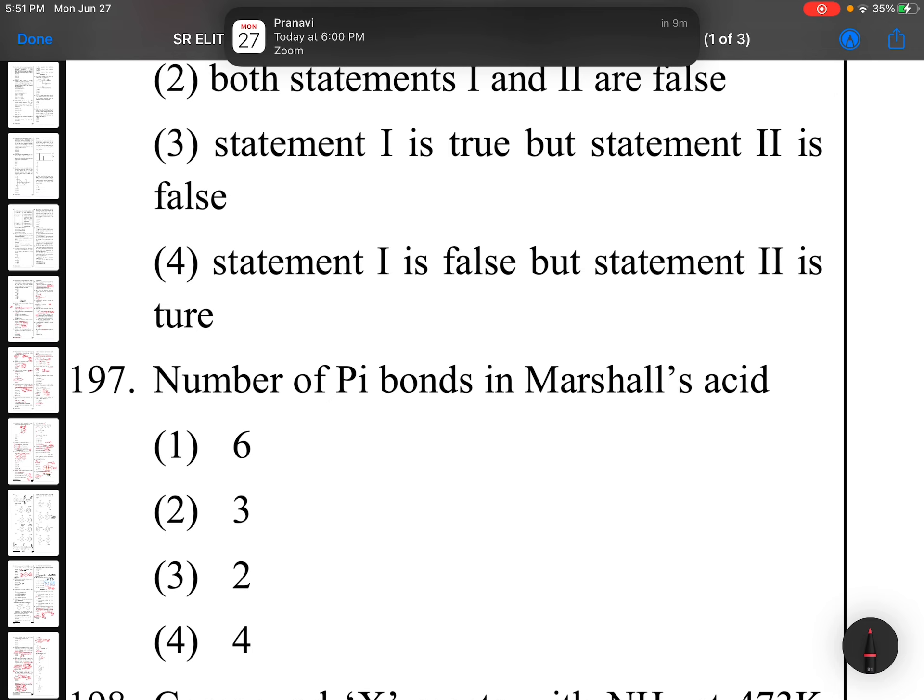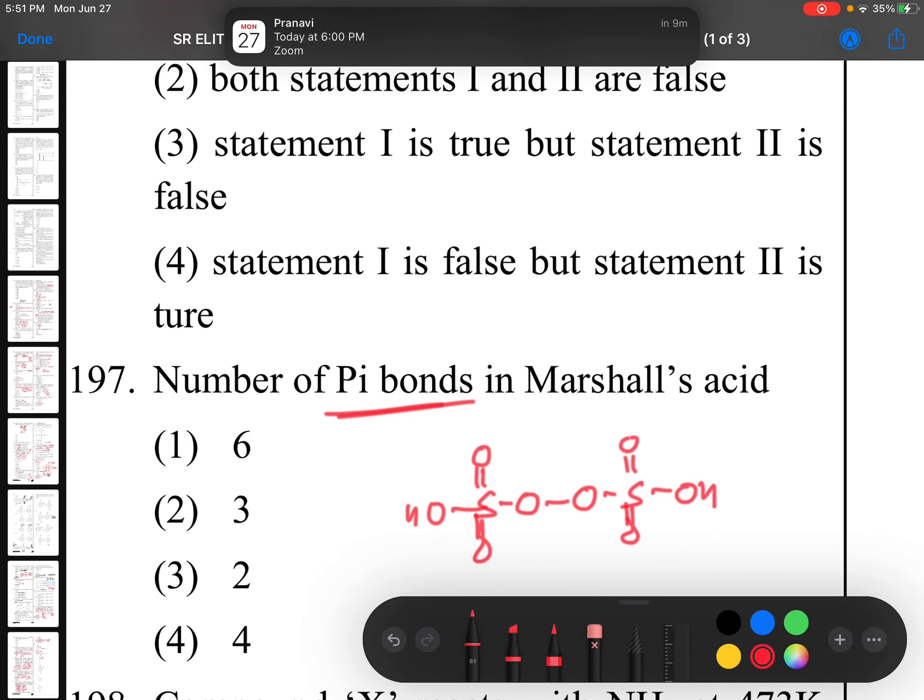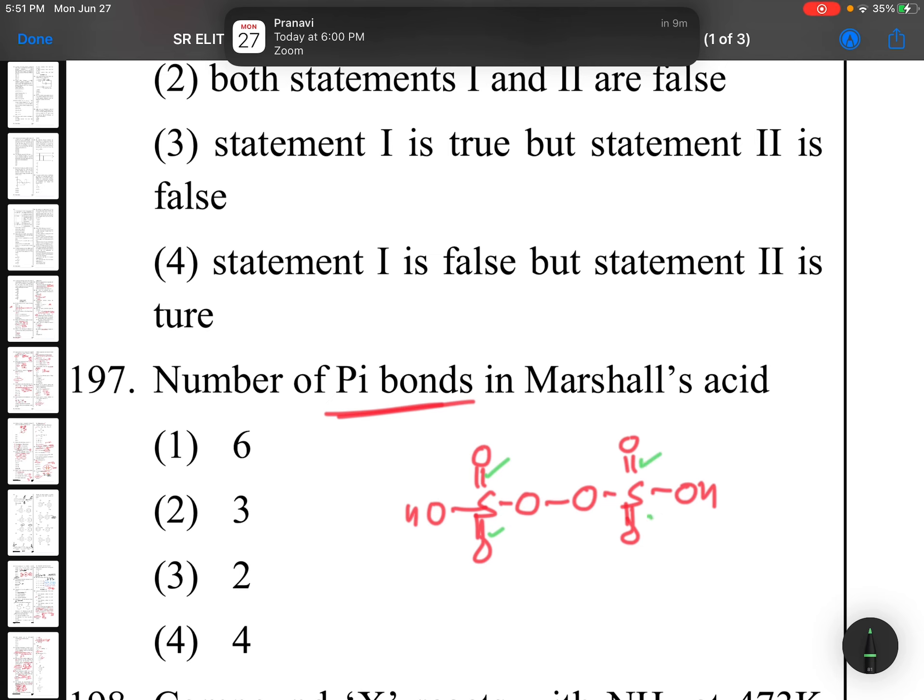Question 197: Number of pi bonds in Marshall's acid. Marshall's acid is peroxo disulfuric acid: O double bond S, O-O bridge, S double bond O with OH groups. Pi bonds: this is 1, this is 2, this is 3, this is 4. Your answer is fourth option. This is JEE Main's question I think if I'm not wrong.